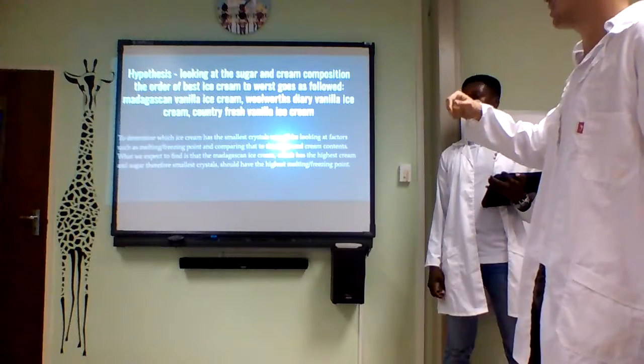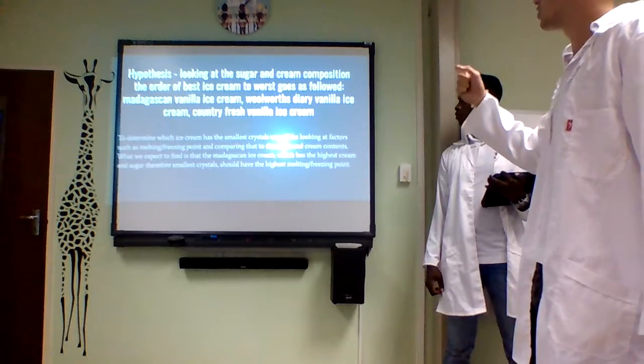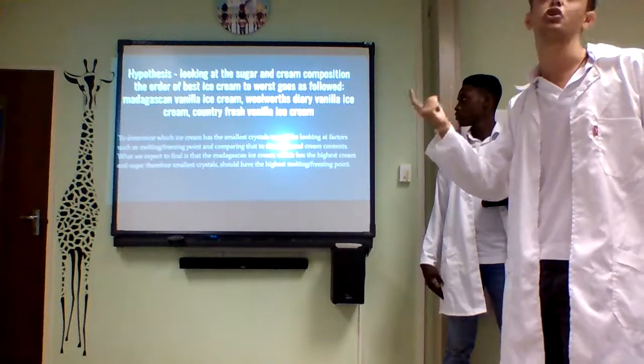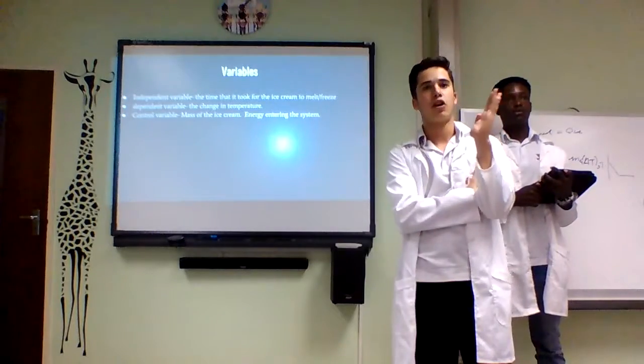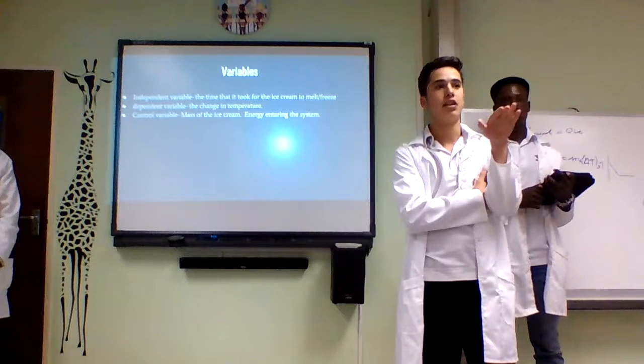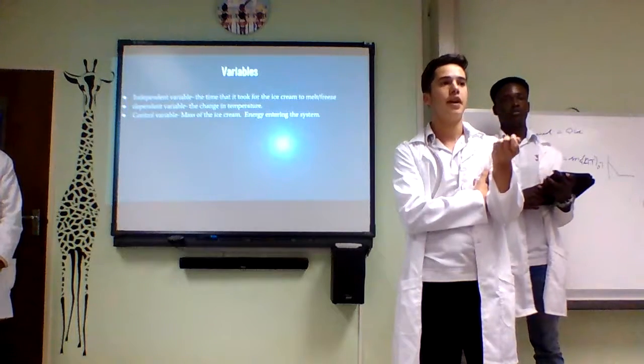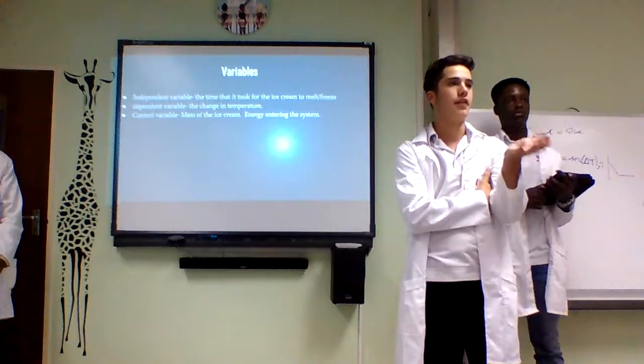We will be looking at the melting and freezing points of each ice cream and comparing that to the sugar and fat contents of each ice cream. We knew that if we could compare all of the ice creams and compare the freezing/melting points, we could deduce which ones had the largest crystals and therefore which were the grittiest and worst quality.